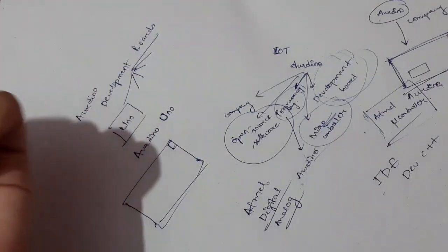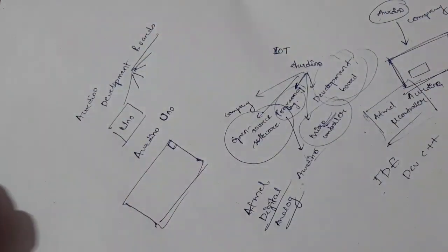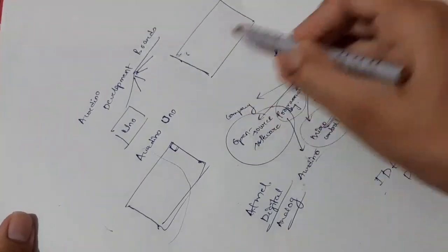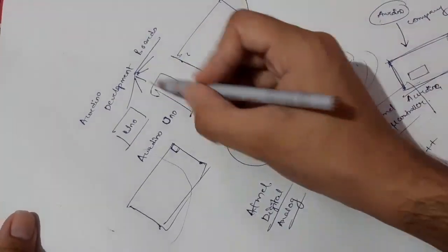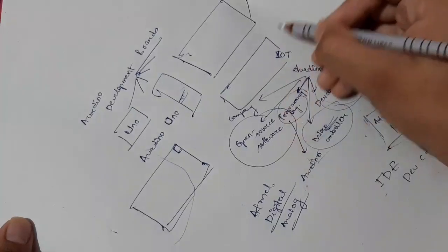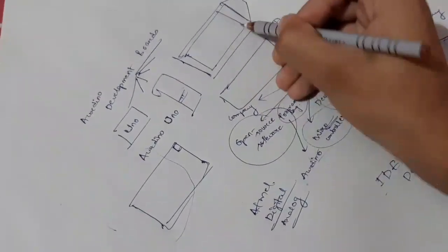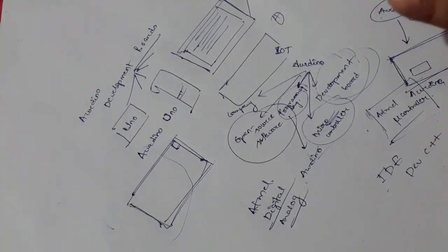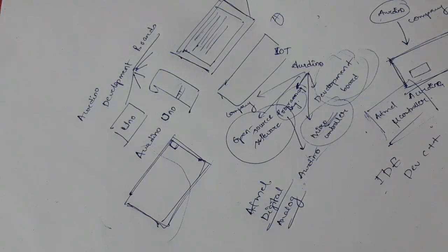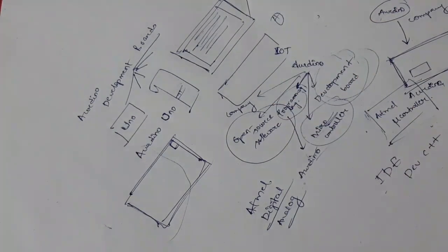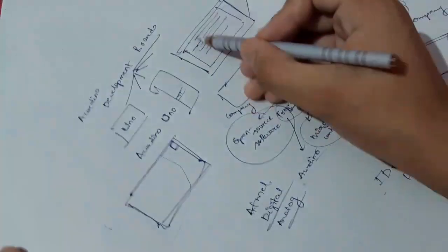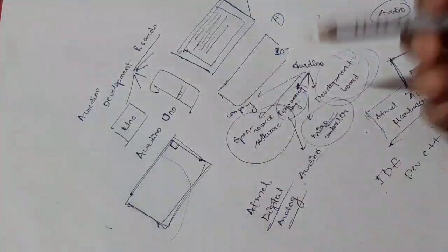You connect the board to your computer directly via a USB port — a male USB-A port on the board side and male USB-B on the computer side. In the code, you have two key components: one setup and one loop.